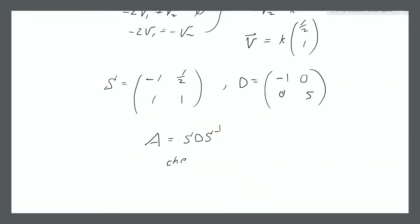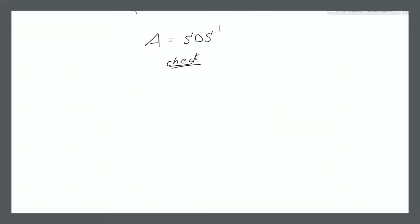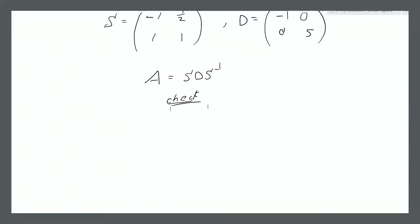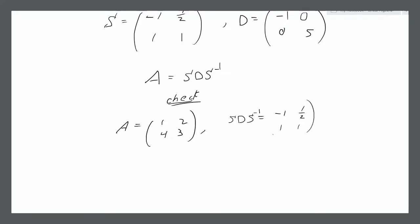We'll check that — always good to check the answer. A equals [[1,2],[4,3]], and S D S inverse equals [[-1, 1/2],[1, 1]] multiplied by [[-1, 0],[0, 5]] multiplied by S inverse. So of course we have to find S inverse.